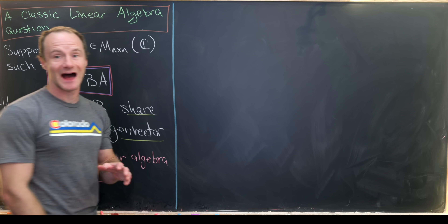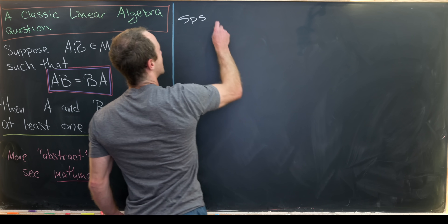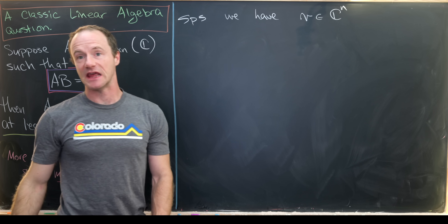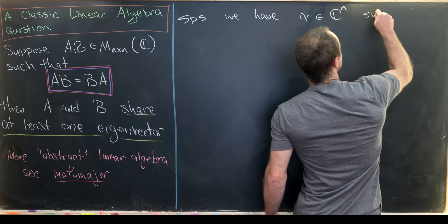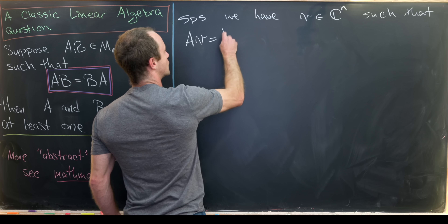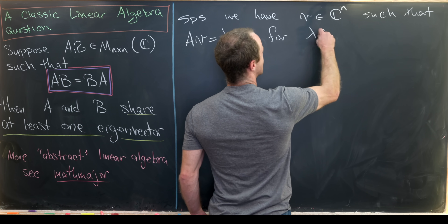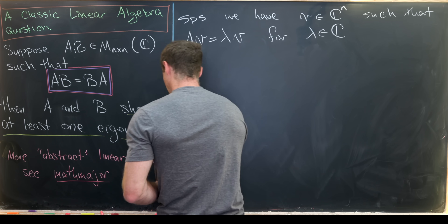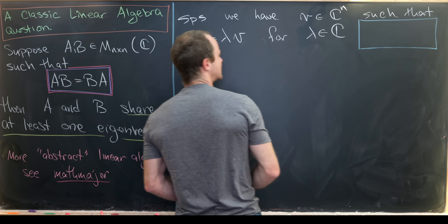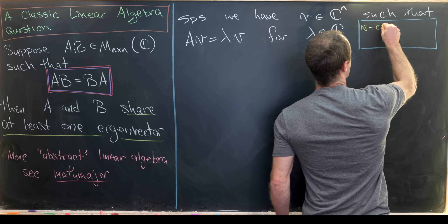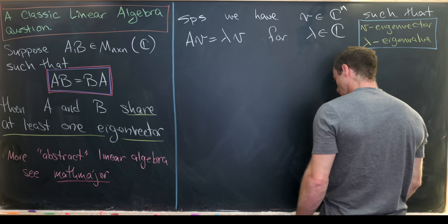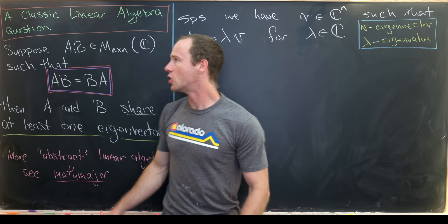Let's start with an eigenvector of A. We say V is in C^n — an n-dimensional complex vector — and it's an eigenvector of A. In other words, A times V equals lambda times V for some lambda in C. That lambda is called the eigenvalue for that eigenvector. So V is the eigenvector and lambda is the associated eigenvalue.